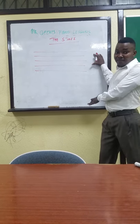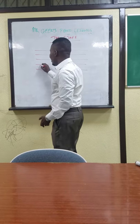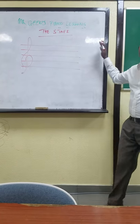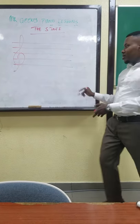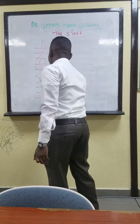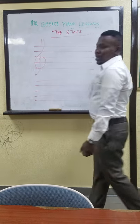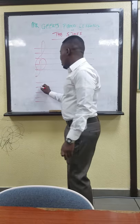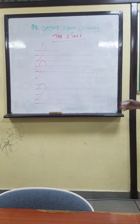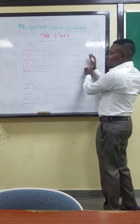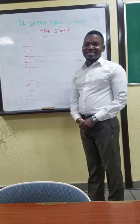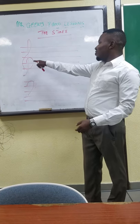This staff is an empty staff. So until we put a clef on it — let's put a clef on it — it becomes the bass staff. As simple as it is. The staff itself is empty, but once a clef is placed on it, the clef is qualifying the staff.